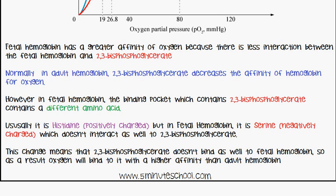Usually it's histidine, which is positively charged in adult hemoglobin, but in fetal hemoglobin it's serine, which is negatively charged. This doesn't interact as well with 2,3-bisphosphoglycerate. This difference means that 2,3-bisphosphoglycerate doesn't bind as well to fetal hemoglobin. As a result, oxygen will bind to it with a higher affinity than adult hemoglobin.